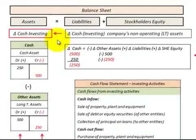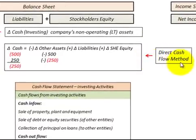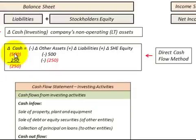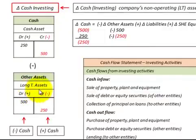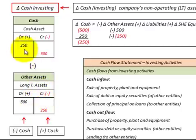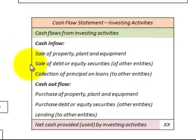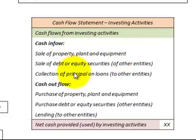The change in cash for investing activities involves the company's non-operating long-term assets, and here we use the direct cash flow method. When we invest in an asset, we reduce our cash; when we sell an asset, we increase our cash. Looking at our long-term assets account, when it increases we reduce our cash, and when it decreases we increase our cash. On the cash flow statement, we list typical cash inflows and cash outflows, then calculate the net cash provided or used by investing activities.